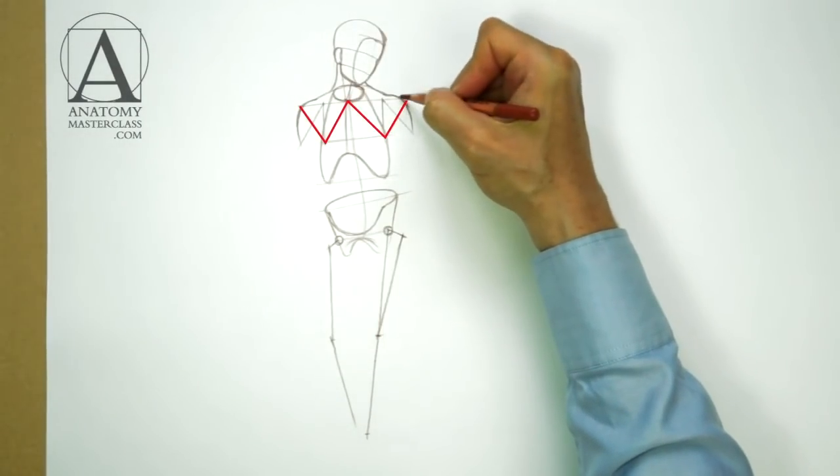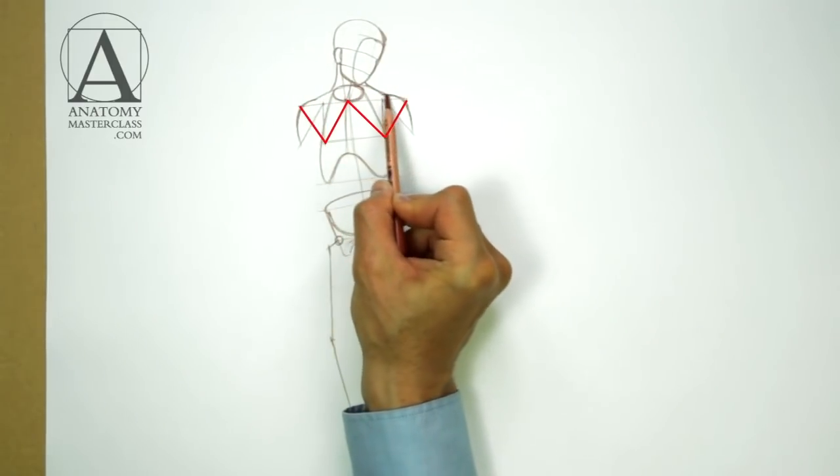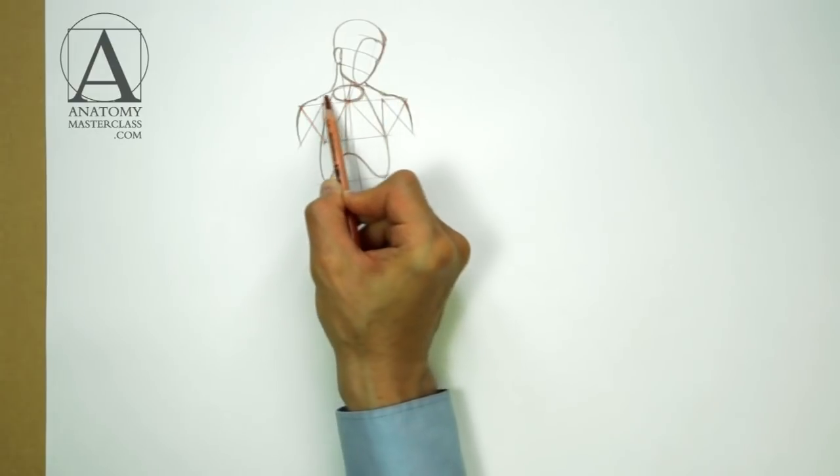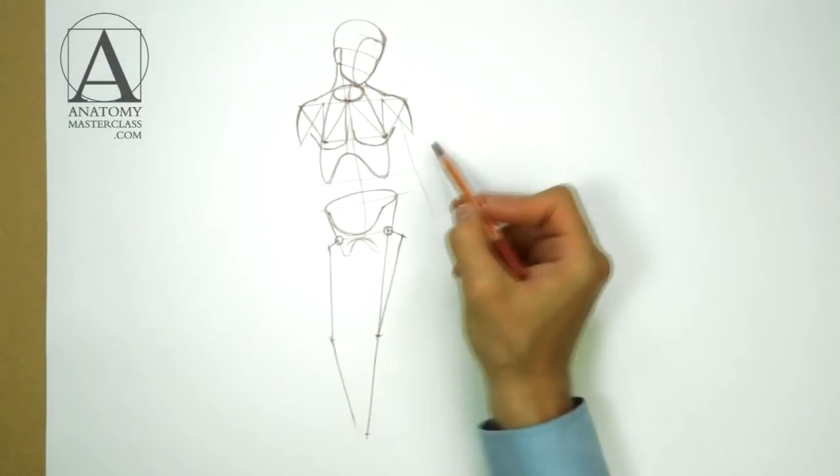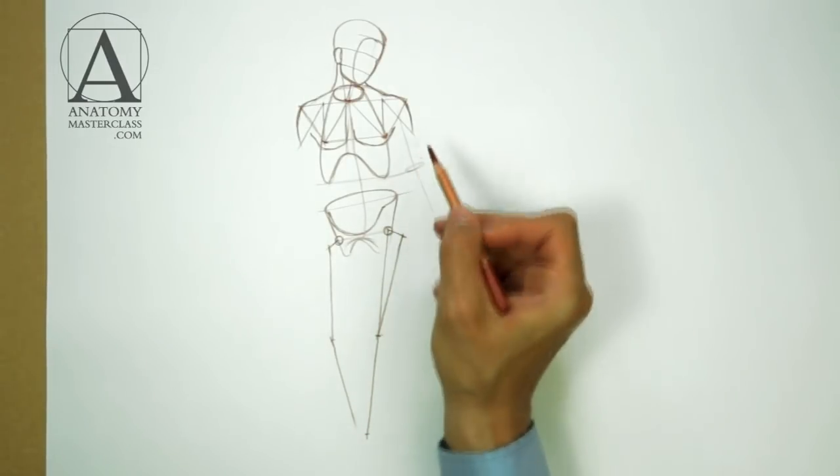Two arms of the W shape, we established earlier, point to the shoulder's edges. The elbow area of the arm is on the same level as the bottom edge of the ribcage.